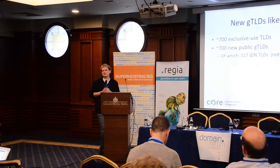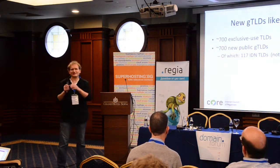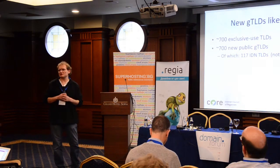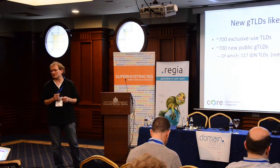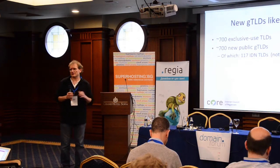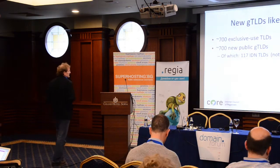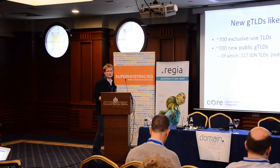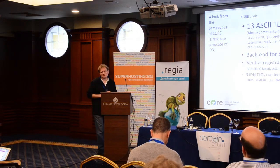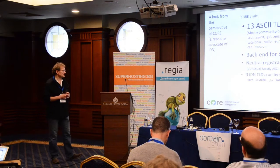If you look at the new GTLD program, simplifying things: I expect about 700 exclusive-use TLDs if things go well, and 700 public suffixes if things really go well. And of these, we have just 117 IDN TLDs — not all of them are going to be public suffixes. But specifically for the Cyrillic TLDs, which I'll come to later, it's different.